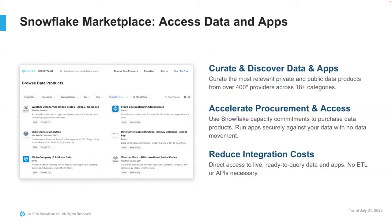Snowflake has a full marketplace of data and applications across 18 different categories — healthcare, COVID-19 research, census data, weather, geography, and more — many of which are freely available. From an application perspective, there's also an application marketplace, and that's where Posit comes into play. You can use Posit from the marketplace to access your secure trusted Snowflake data.